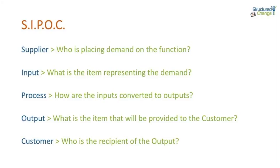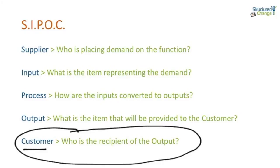So from a SIPOC perspective, you can see supplier, input, process, output — and we are going to start with who is the recipient of something from this process. It's very important that when you're setting up your workshop, or finding out from the function how they identify their customers, it's sometimes worthwhile to do a bit of research to find out who will be in the room. It's also important that you may want to provide a couple of people from different functions in the workshop — for instance, supply chain, operations, or maintenance — because it brings out more challenge but also gets people thinking more broadly.